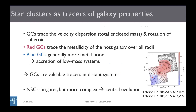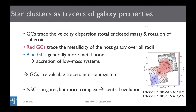With that I want to come to my summary. I hope I've convinced you that with MUSE we can really test how globular clusters and star clusters in general compare to the host galaxies. We've seen that they are very valuable tracers in distant systems, and nuclear star clusters should not be neglected — they can also tell us something about the central evolution of galaxies. Thank you.